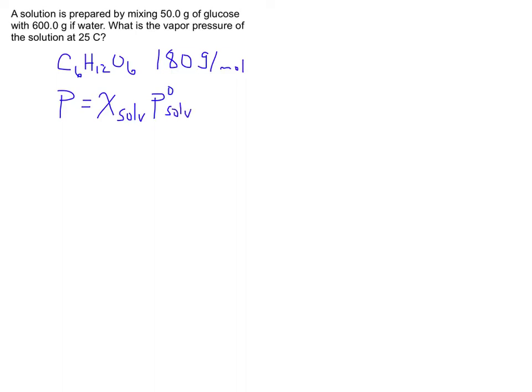And we know this is water, and we can look this up. The pure vapor pressure of water at 25 degrees Celsius, the P° of water at 25 degrees, is 23.8 torr. So just under 24 millimeters of mercury.